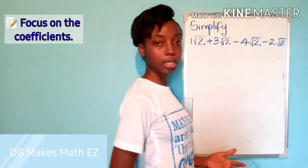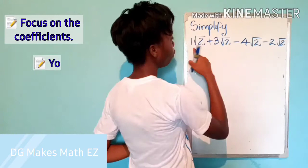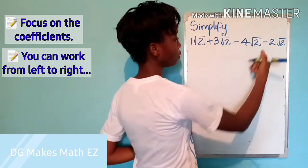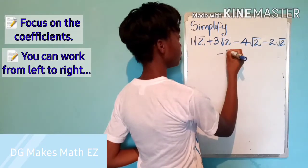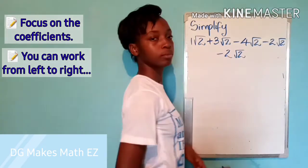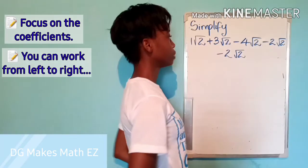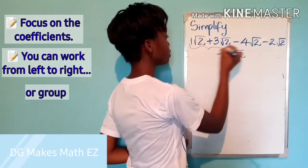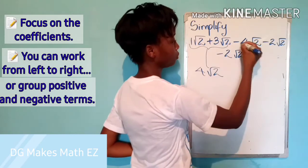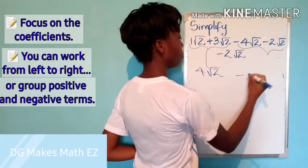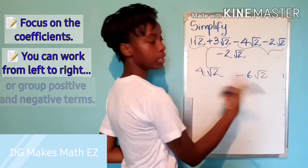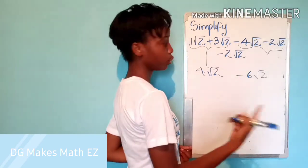So I'm going to operate on those coefficients. 1 plus 3 is 4, minus 4 is 0, minus 2 gives us negative 2 root 2. Some people like to do it in parts — even if you combine the first two to get 4 root 2, minus 6 root 2, it would still take us to negative 2 root 2.